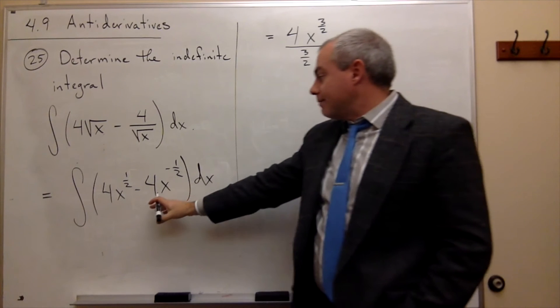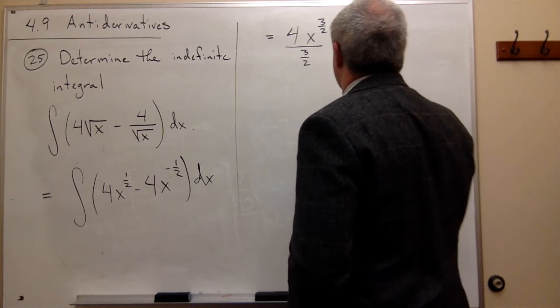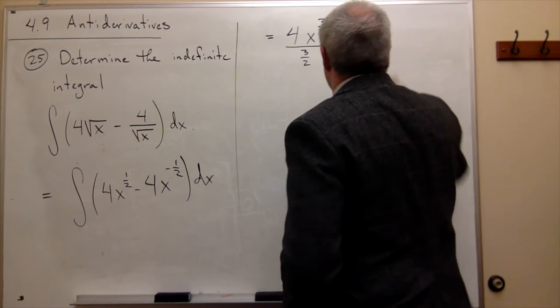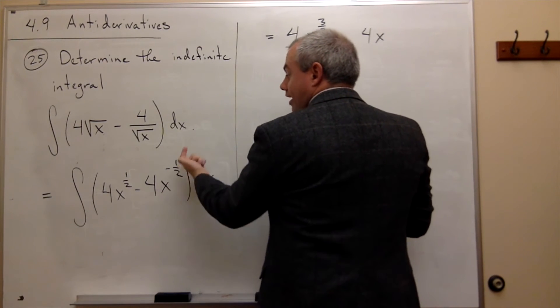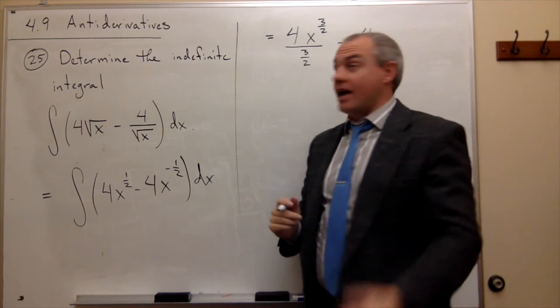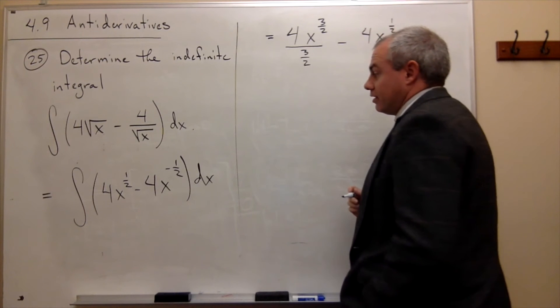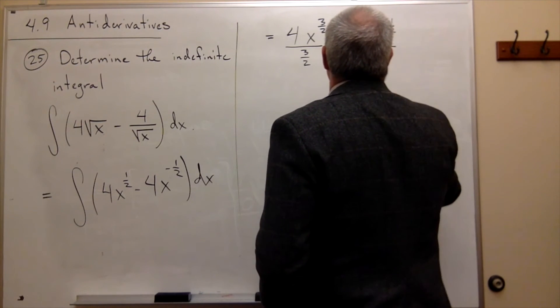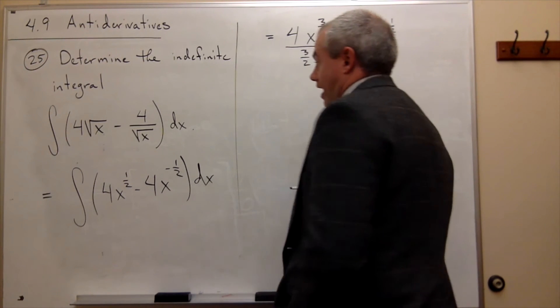Now let's do the same thing for the second guy. I have a minus 4 as a constant, so it's just going to stick around, times x to the, well, right now it's negative 1 half, but I'm going to add 1 to that. So if I add 1 to negative 1 half, I get positive 1 half. So this becomes positive 1 half. And then I'm going to divide by the new power, which is 1 half, so I divide by 1 half.